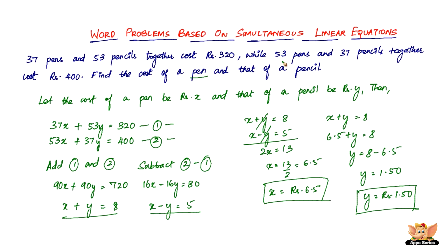So the cost of one pen is rupees 6 and 50 paise, and the cost of a pencil is rupees 1 and 50 paise. As I've mentioned before, the main skill in word problems based on simultaneous linear equations is reading the question and forming the equations. This new method of adding and subtracting equations helps solve problems with large numbers efficiently. I'll see you in the following videos with more word problems.